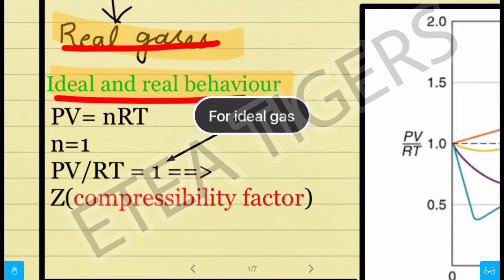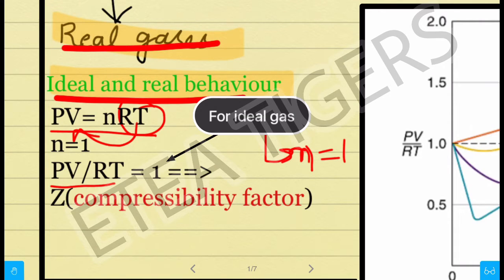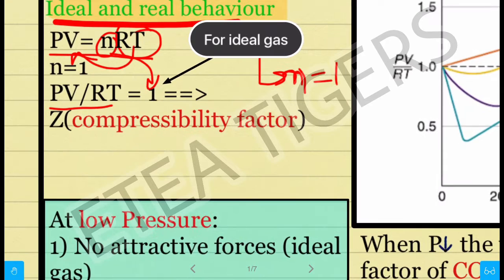If we talk about real behavior, we take PV equals nRT. If we put n equal to 1, it's just ideal gases — the ideal gases where n is equal to 1. Now, if PV is divided by RT, then PV/RT equals n, and the n value is equal to 1. So 1 equals PV/RT, and this is equal to the compressibility factor, which we represent as Z.